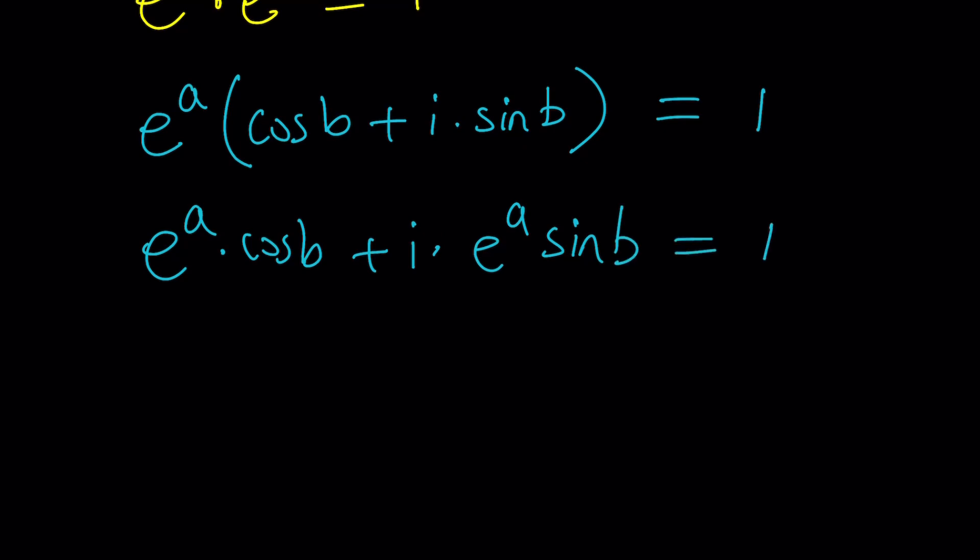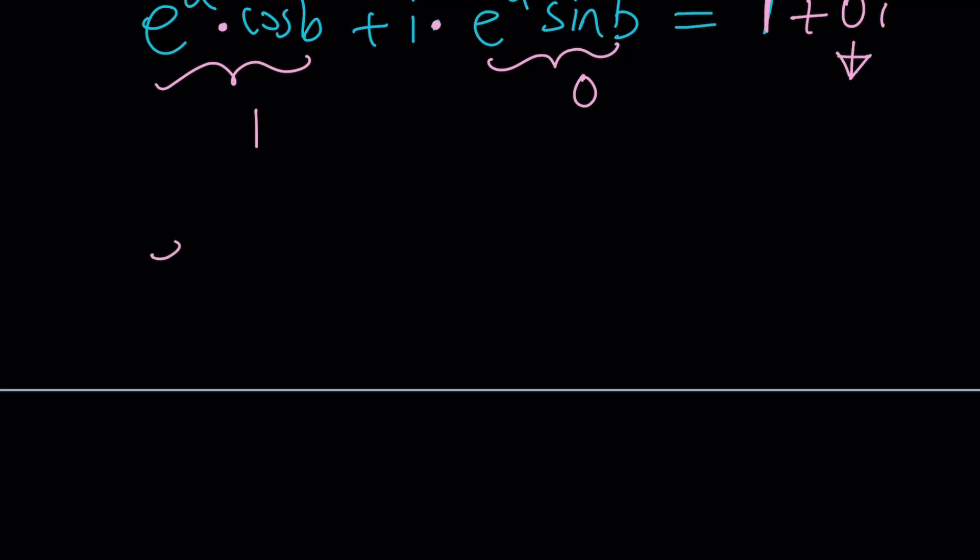Awesome. Now, when are two complex numbers equal? When their real parts are equal and that also implies that their imaginary parts are equal. Let's start with the reals. So this part needs to equal one. And since there is nothing imaginary on the right hand side, one can actually be written as one plus zero I, which indicates that the imaginary part is zero or there is no imaginary part. So this needs to be zero. Great. That gives us a system of equations. E to the A cosine B is one. And E to the A sine B is zero.